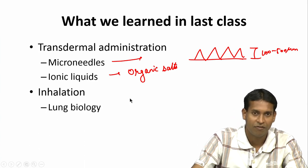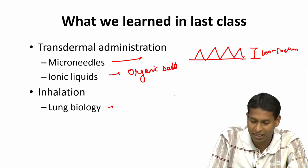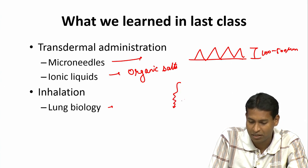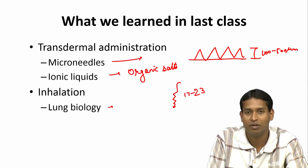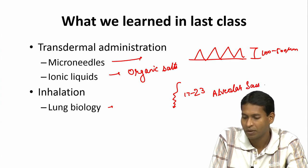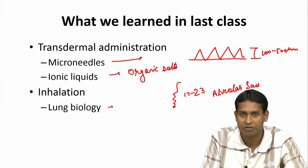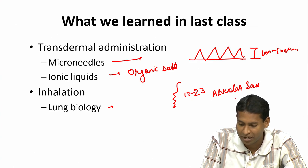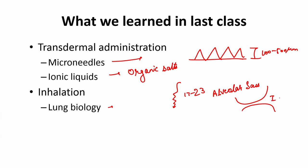Then we started inhalation, where first we discussed lung biology. Once you inhale things the air has to bifurcate several times — almost 17 to 23 times — before it reaches the final compartment, which is the alveolar sacs, which are surveyed by macrophages. This is where major absorption of drugs happens. The alveolar sacs are very close to blood vessels, this layer is just a single cell layer, and so absorption happens quite extensively here. This is also where gas exchange happens — oxygen goes in and CO2 from the blood gets exchanged — which is why the lung is heavily vascularized.